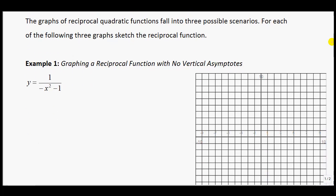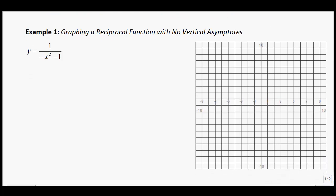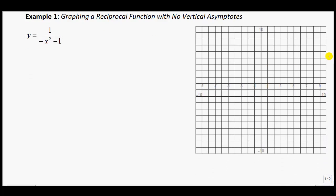The graphs of reciprocal quadratic functions fall into three possible scenarios. For each of the following three graphs, sketch the reciprocal functions. Example 1: graphing a reciprocal function with no vertical asymptote. First, we always graph the original function, so first graph the function y equals negative x squared minus 1.